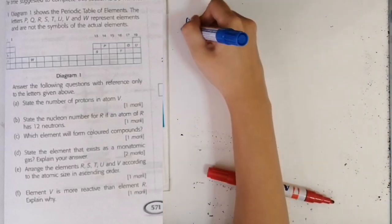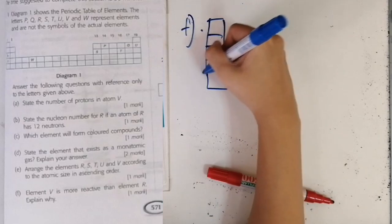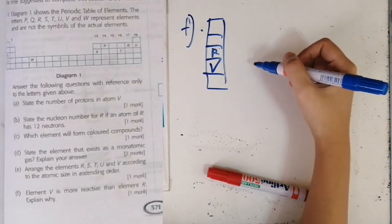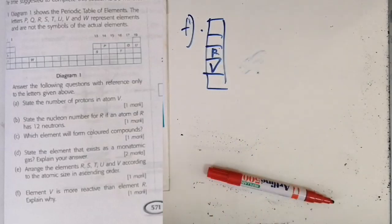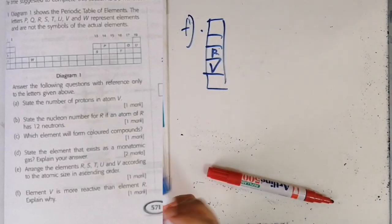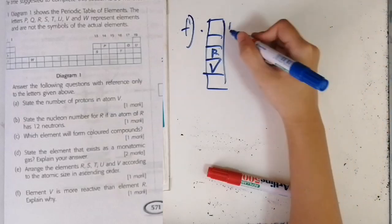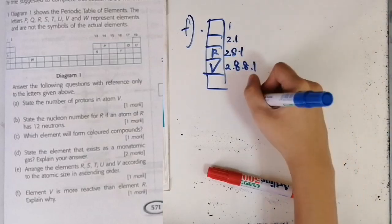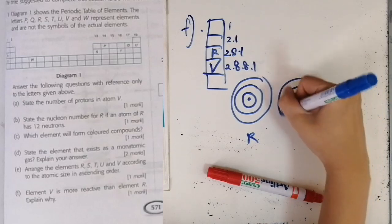Question 1f: element V is more reactive than element R — explain why. We have R and V both in group one. To explain this, we draw out the electron configurations of both R and V. As established, R is 2,8,1 and V is 2,8,8,1.